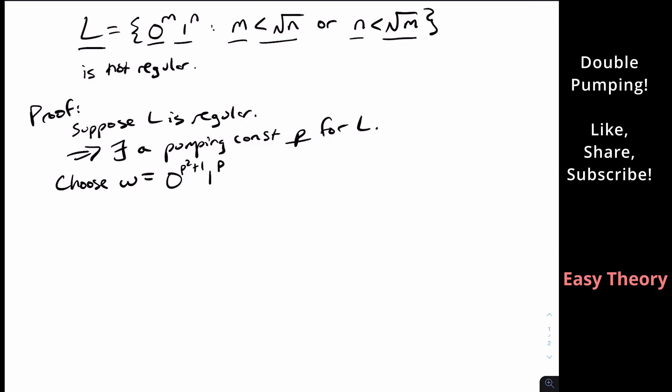And I could have inverted the numbers here. So it could have been zero to the P, one to the P squared plus one, that would have worked fine too. But I'm going to do it this way. So why did I pick P squared plus one? Well, P squared plus one square root is strictly larger than P because of this plus one here.